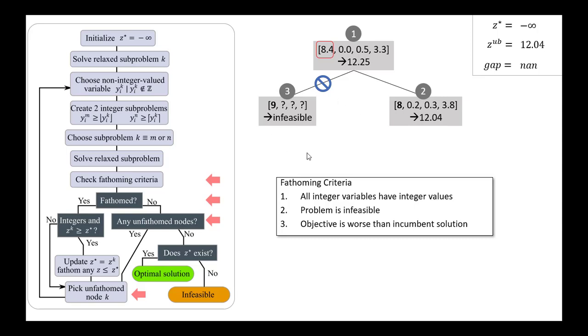However, node 3 is infeasible. So by criteria 2, we can, in fact, fathom node 3, and there's no further exploration there.